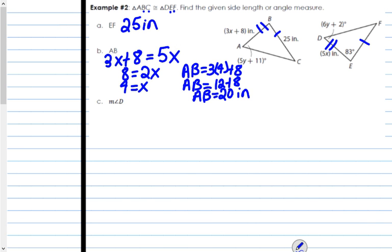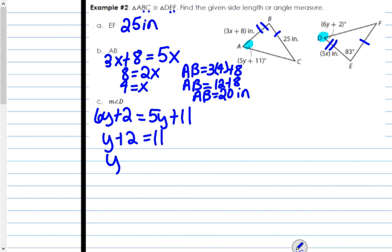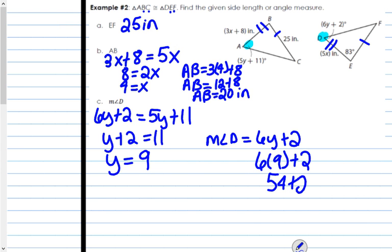Now the measure of angle D we also do not know. But we know that the measure of angle D is equal to the measure of angle A, because they are corresponding angles from congruent triangles. So we're going to set up angle D is 6Y plus 2, and it's equal to angle A, which is 5Y plus 11. Again, we're going to solve for Y. Subtract 5Y from both sides, we have Y plus 2 equals 11. Subtract 2 from both sides, we have Y equals 9. We need to go back in and plug in Y. So the measure of angle D is 6Y plus 2, so 6 times 9 plus 2, 54 plus 2. Angle D equals 56 degrees. So again, we have to set them up equal to each other, we solve for the variable and then plug the variable in.